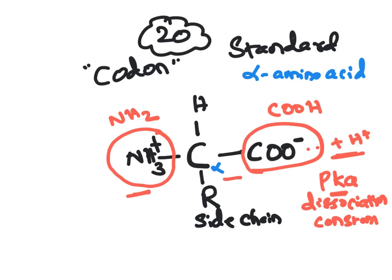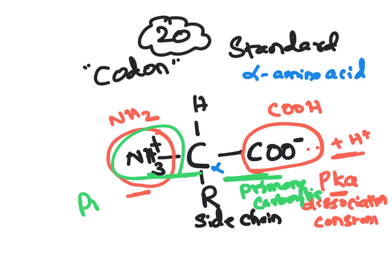The carboxyl group attached to the alpha carbon is called the primary carboxyl group, and the amino group attached to the alpha carbon is called the primary amino group. Each amino acid has a primary carboxyl group and a primary amino group. In an isolated amino acid, these groups are free and do not interact with any side chains. There is an exception, which will be addressed later.